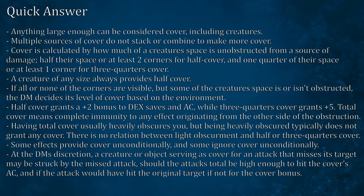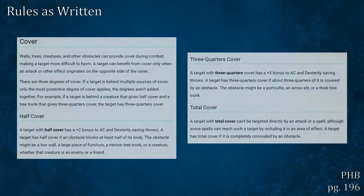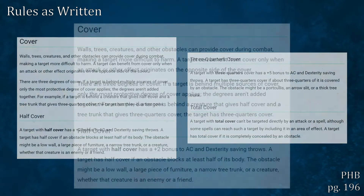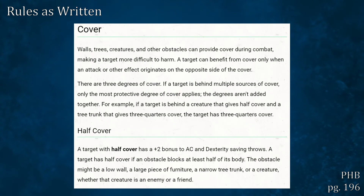To better understand why all that works the way it does, let's go over the sections available to us to describe how to use cover. The first place we should look is the base rules for cover on page 196 of the Player's Handbook. Walls, trees, creatures, and other obstacles can provide cover during combat, making a target more difficult to harm. A target can benefit from cover only when an attack or other effect originates from the opposite side of the cover. There are three degrees of cover. If a target is behind multiple sources of cover, only the most protective degree of cover applies — the degrees aren't added together. For example, if a target is behind a creature that gives half cover and a tree trunk that gives three quarters cover, the target has three quarters cover.